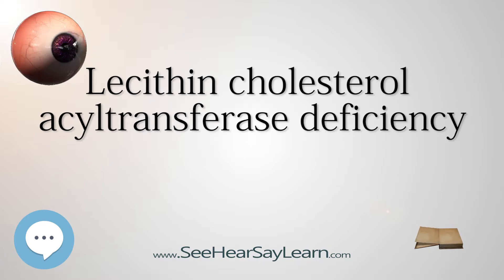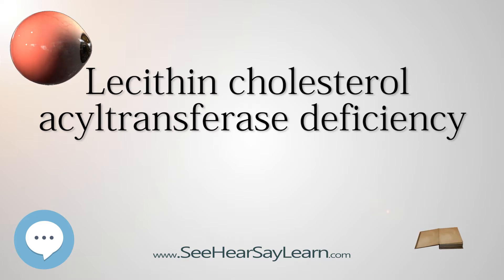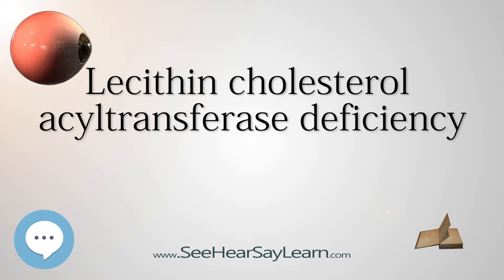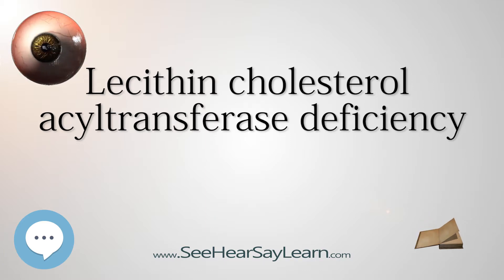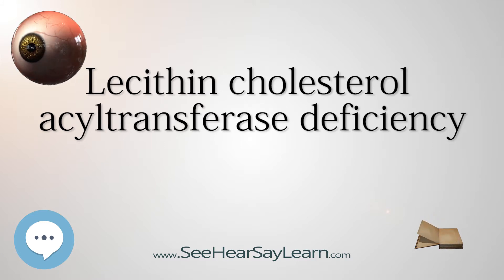Familial LCAT deficiency lab findings: CBC shows normochromic normocytic anemia. Urinalysis shows proteinuria in young adults, suggestive of renal failure. Blood chemistries show elevated blood urea nitrogen (BUN) and creatinine, suggestive of renal failure. Lipid panel shows low HDL (10 mg/dL), elevated VLDL and triglycerides, high plasma unesterified cholesterol, and low plasma cholesterol ester. Plasma LCAT activity is decreased, determined by decreased ability to esterify radioactive cholesterol and exogenous lipoproteins.